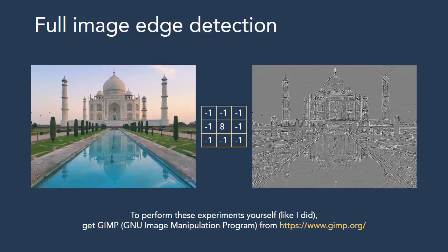To perform experiments like these, you can obtain GIMP — the GNU Image Manipulation Program — from www.gimp.org. GIMP is free and open source software which you can install on Windows or Linux. You can perform experiments like these very easily because GIMP has a built-in module for specifying convolution matrices and applying them to images.